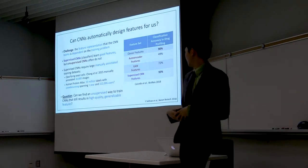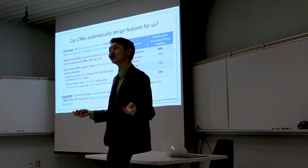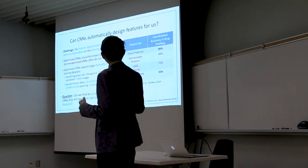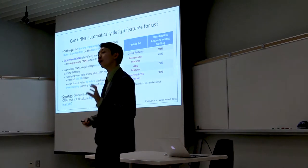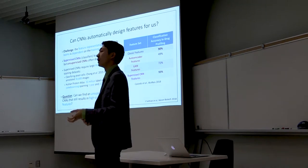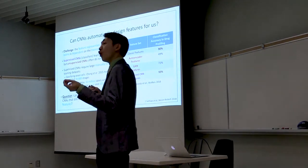So this leads us to an actual question then. Can CNNs automatically design features for us? And the short answer is that it's challenging because the feature representation that the CNN learns is dependent on the training problem. In short, the CNN is only going to learn information from the image that it needs to solve this training problem.